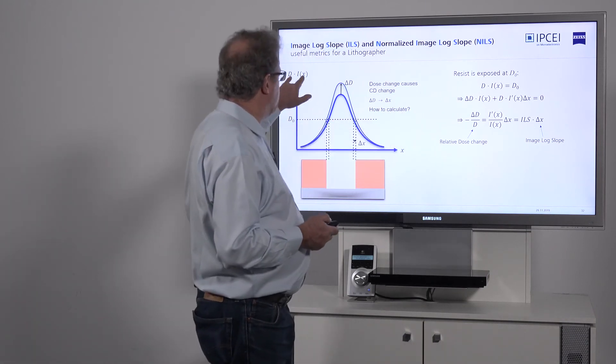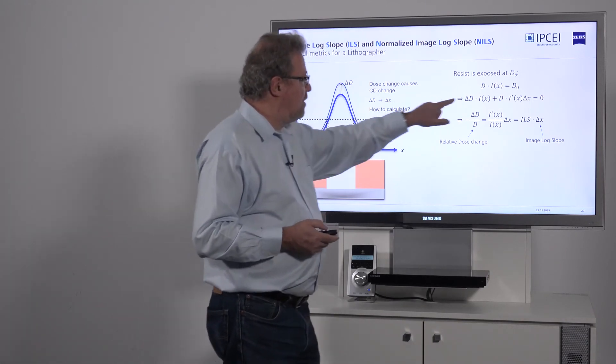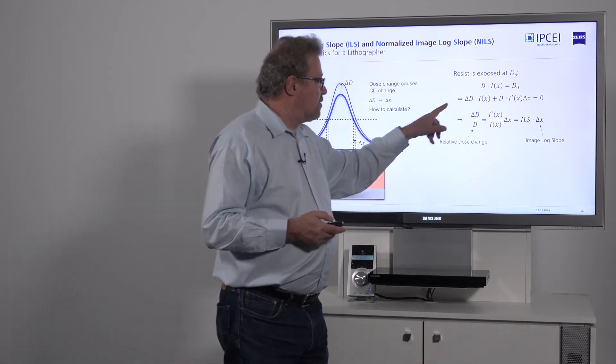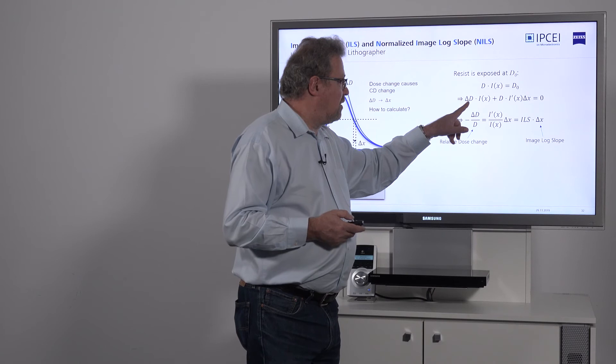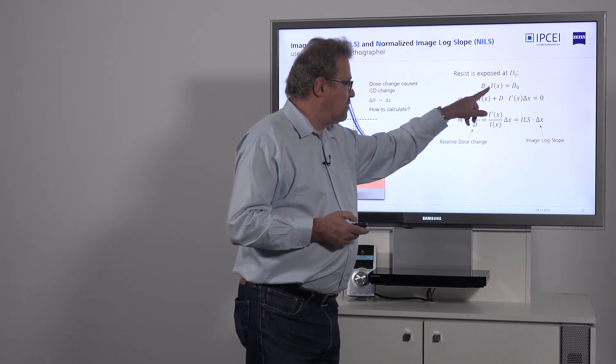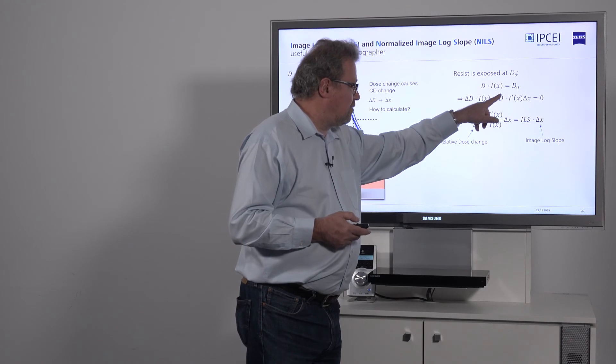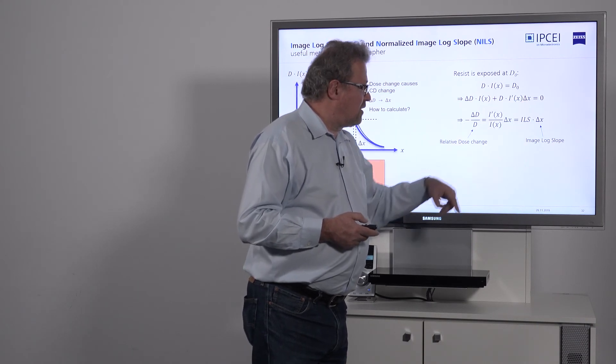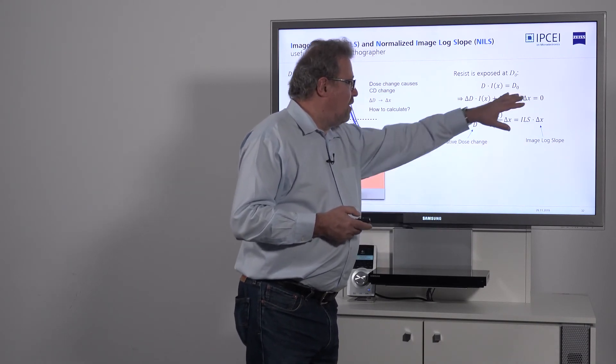We have dose times aerial image equals the threshold. That's where your edge is going to be. If you build the differential, you have delta dose times the intensity. Then you need to differentiate the intensity, so plus dose times the derivative of the aerial image times delta x equals zero.